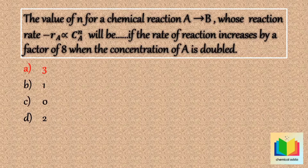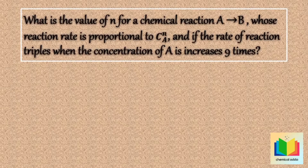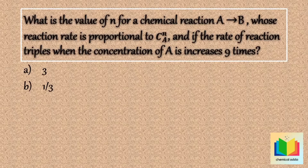Now the next question. What is the value of n for a chemical reaction A gives B, whose reaction rate is proportional to cA raised to n, and if the rate of reaction triples when the concentration of A is increased nine times? Options are: option A: 3, option B: 1/3, option C: 1/2, option D: 1/9.